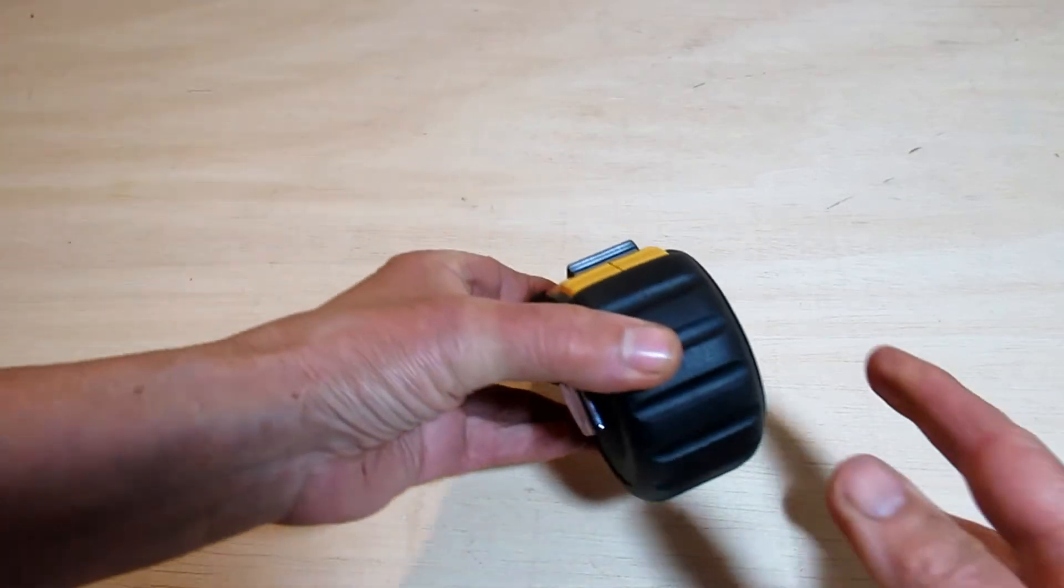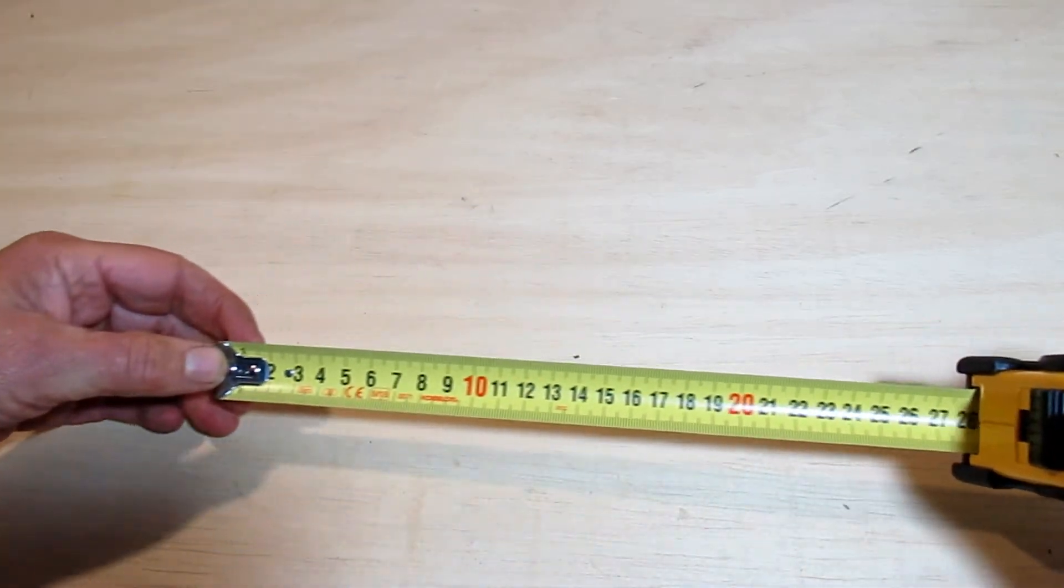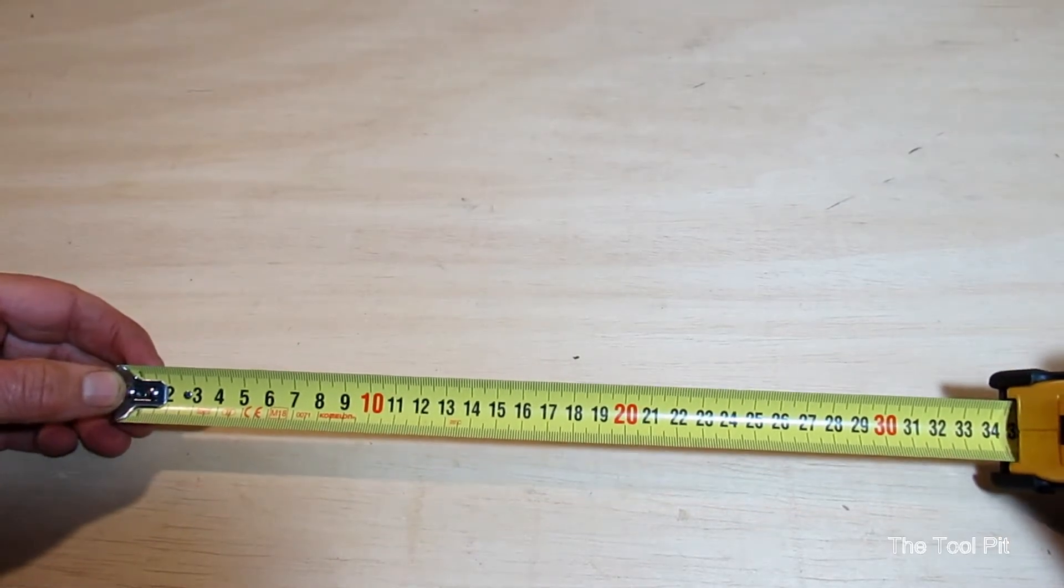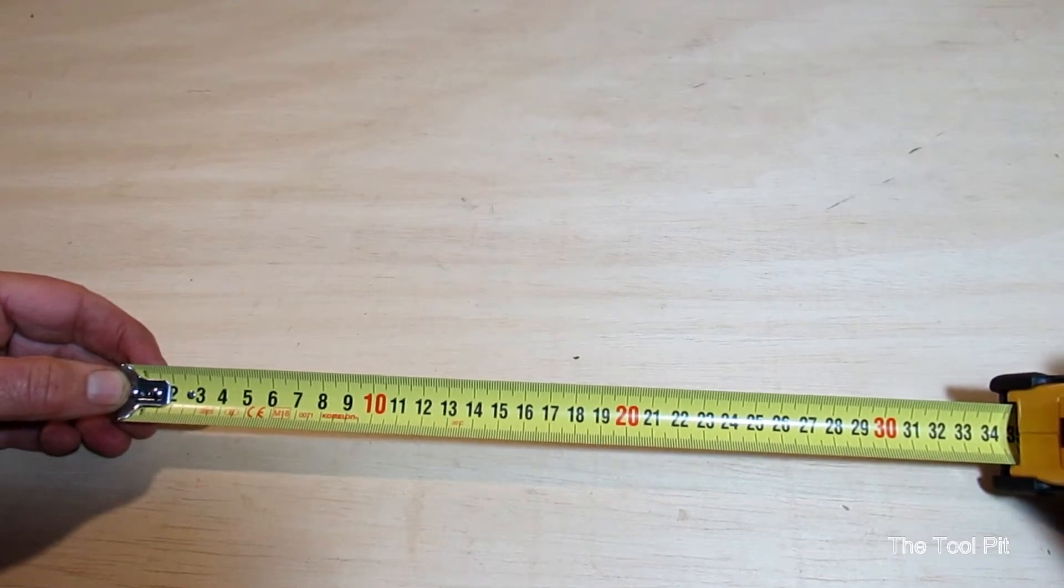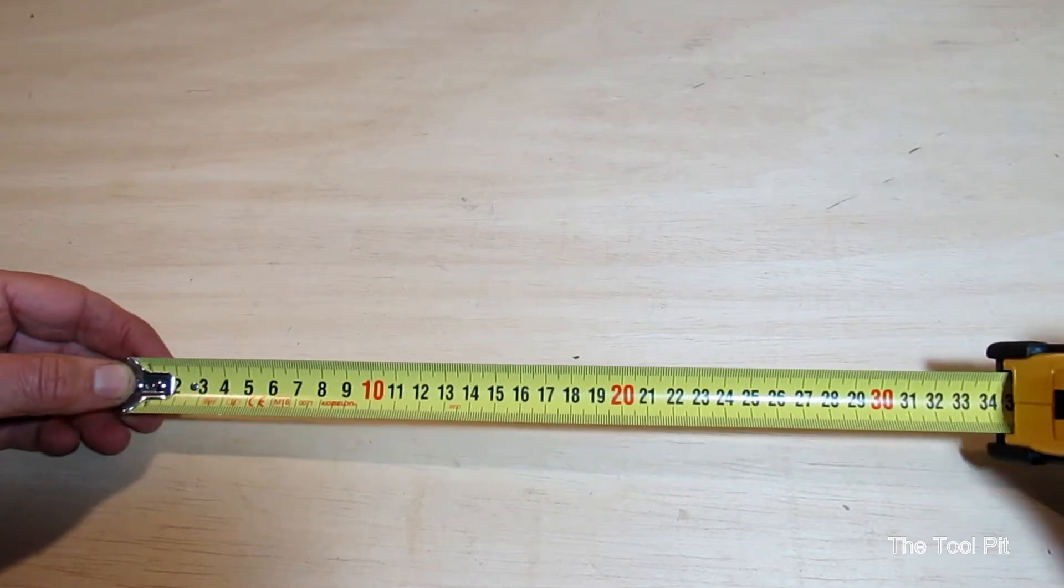The blade's about one inch wide and it stays rigid out to about three and a half meters, which is about the same as a Stanley PowerLock. The only issue for me is that I'm still learning the metric system and it only has millimeter and centimeter markings on it.